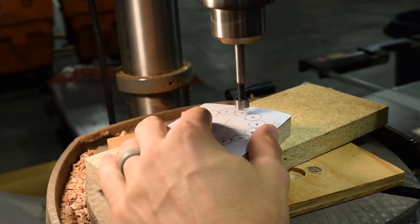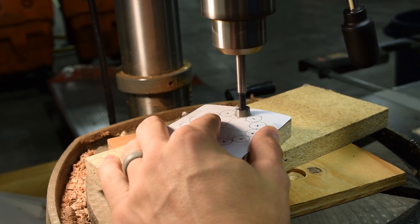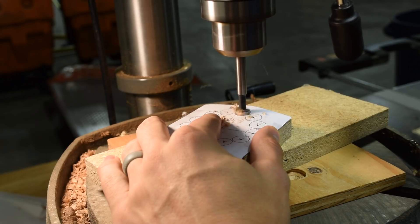I set the depth so that the Forstner bit does not go through the other side, but comes very close. We want the magnets to be as close to the surface as we can get them.